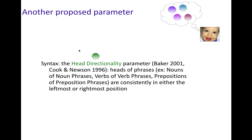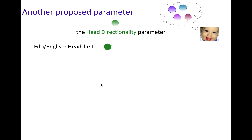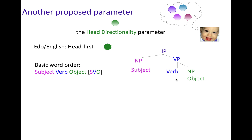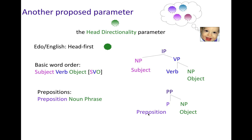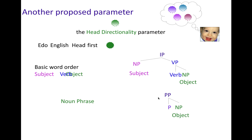Another example parameter is something called the head directionality parameter, and this has to do with the order that words and phrases appear. Nouns and noun phrases, verbs and verb phrases, prepositions and prepositional phrases — the head is the core thing in that phrase. Where does it appear with respect to the other elements? In English and Edo, a head-first setting means you like to have the head of your phrase come before the other stuff. Inside a verb phrase, the verb comes before the object. Prepositional phrases are called pre-positions because the preposition — the head — comes before the rest, so head-first explains both verb phrase and prepositional phrase behavior.